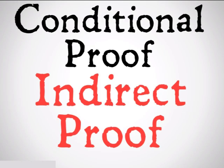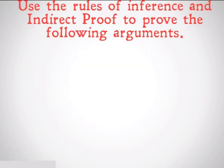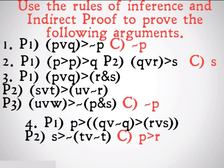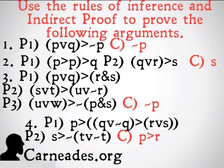That was indirect proof. Before we move on to categorical logic, we're going to take a look at a final set of problems where you should use the 18 rules of inference and indirect proof to prove the conclusions. Watch a new video every single day for 100 days here at Carneades.org and stay skeptical everybody.